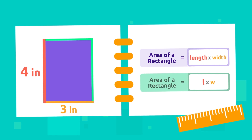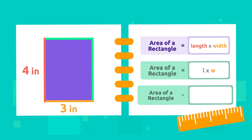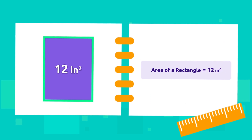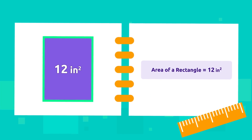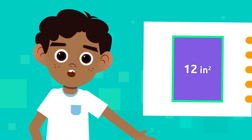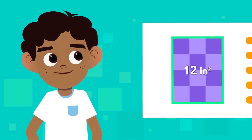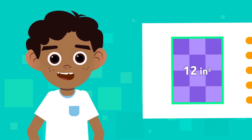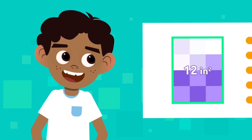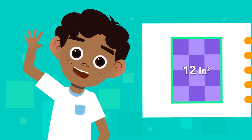To calculate its area, we must multiply the length by the width — that is four times three equals twelve. The area of this rectangle is equal to twelve square inches. That means twelve one-square-inch squares fit in this rectangle. Easy, isn't it?